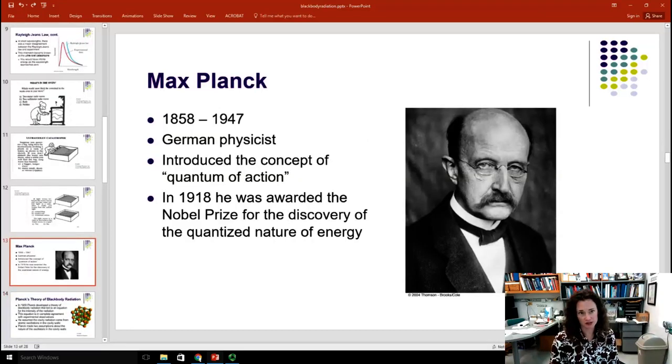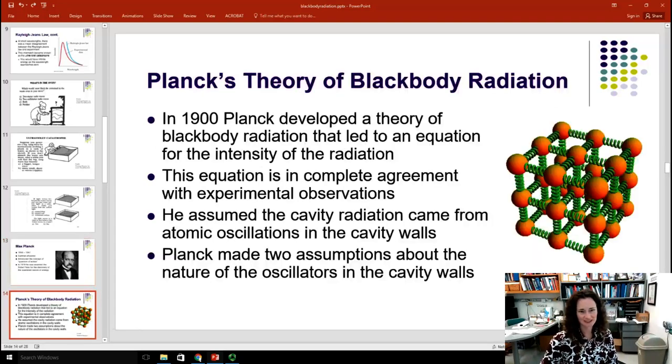So, here's where Max Planck comes in. He was a German physicist, and in 1918, he was awarded the Nobel Prize for the discovery of the quantized nature of energy, in part, because of, well, entirely, because of all the work that he did on black body radiators, and coming up with a theoretical model that described the black body radiation curve. And even though he doesn't look incredibly happy about it in this picture, I'm sure that he really was.